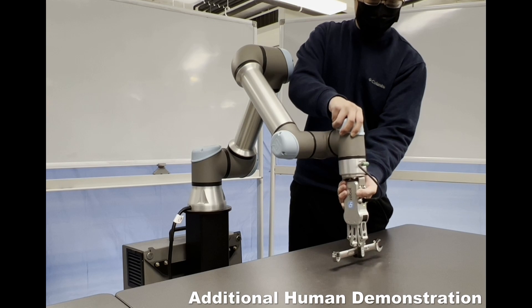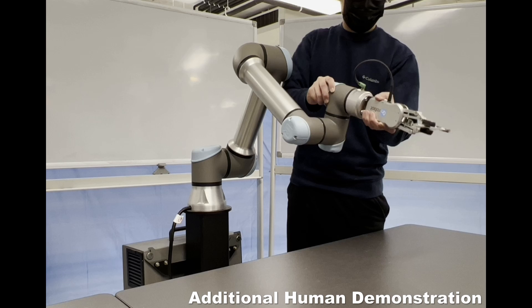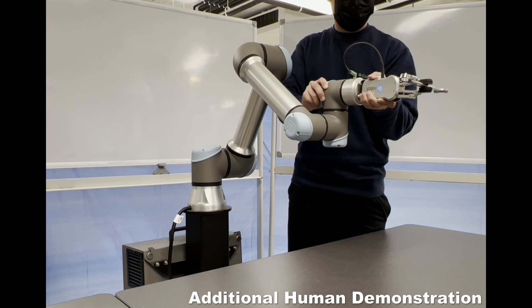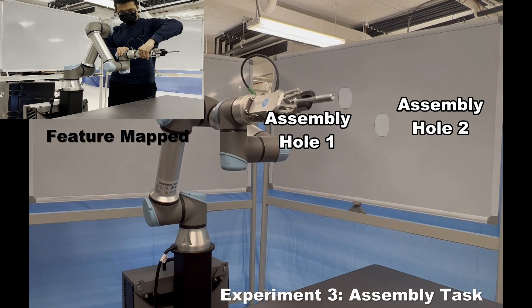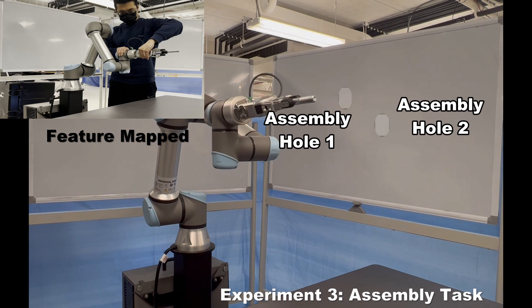After adding another human demonstration and then retraining the RL-based motion planner, the appropriate motion plan can be generated to satisfy all task constraints.